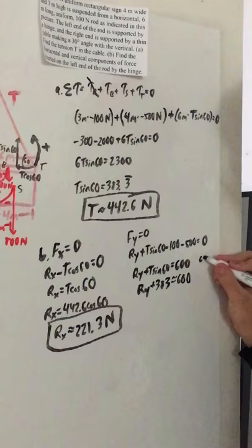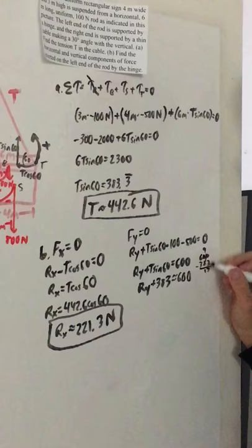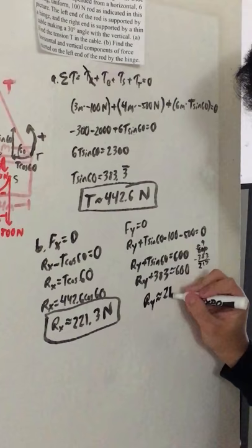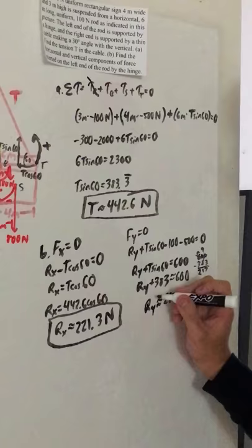So now what we do is take 600 minus 383, and that makes this equation about 217 newtons. It's actually 216.6 repeating newtons, but let's just approximate this.